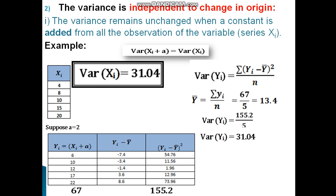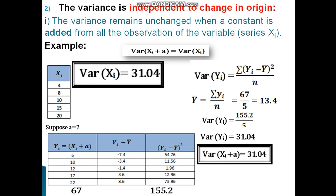The original variance of Xi was also 31.04. When we added a constant number 2 to the series, the variance remained the same. So variance of (xi plus a) equals variance of xi, which equals 31.04. The variance does not change.